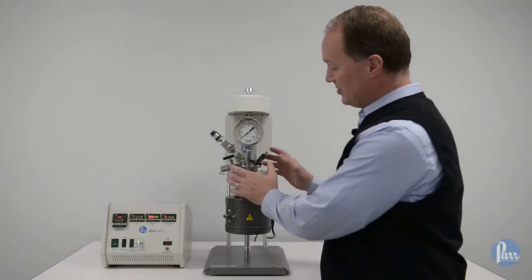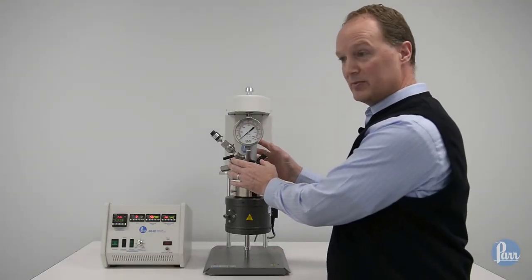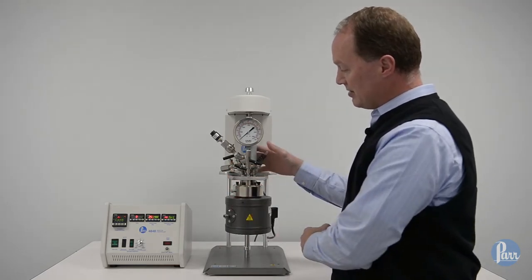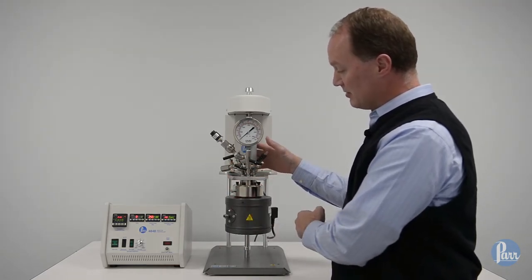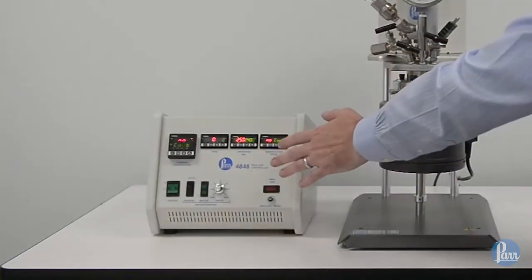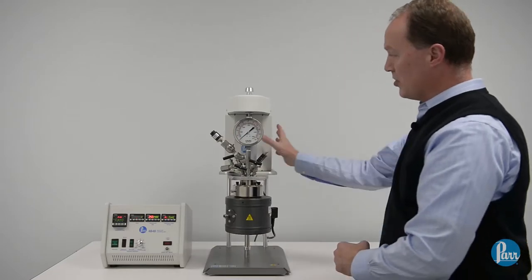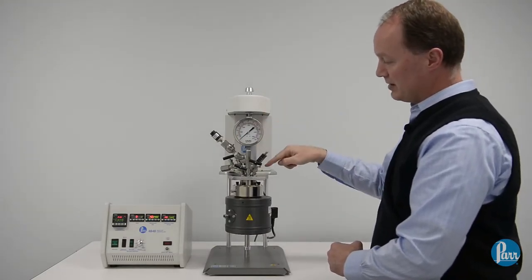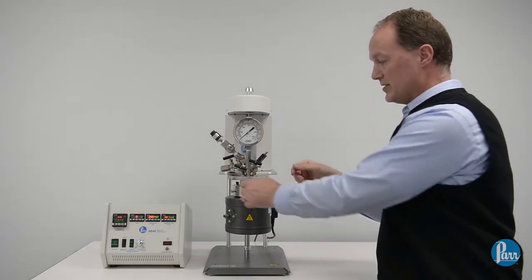Today we're going to talk about the main features of the Parr mini reactor vessel assembly, which consists of head closure, cylinder, and main head fittings, along with some internal pieces. To give you context of the full system, you can see the controller, the stand, the motor in this enclosure, as well as the overarm drive which drives the magnetic drive.